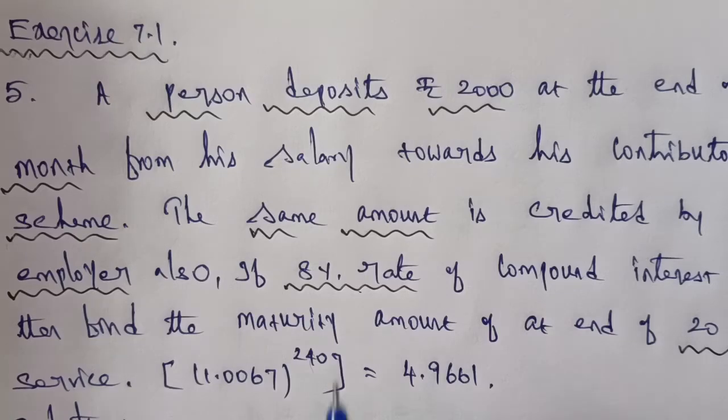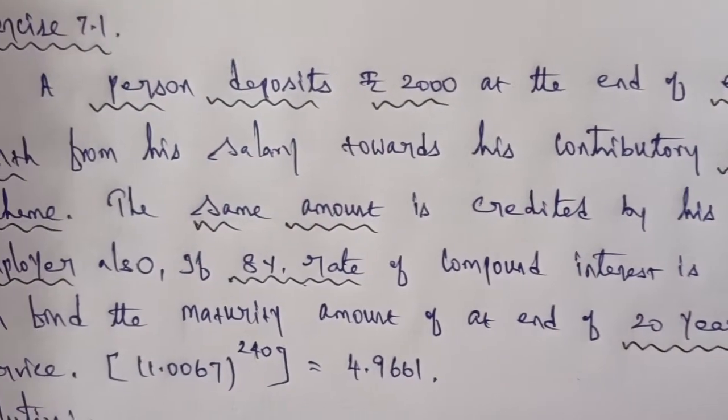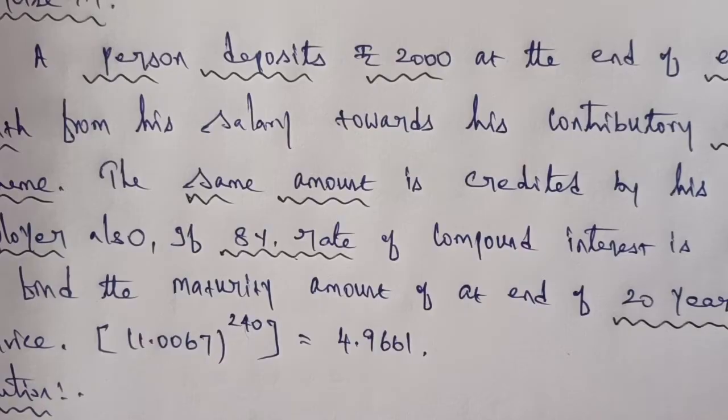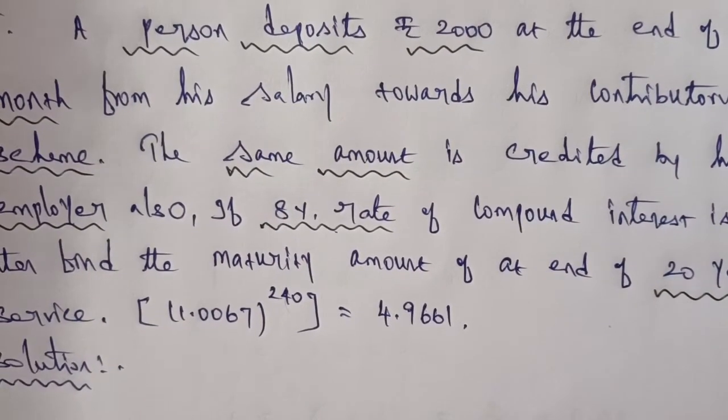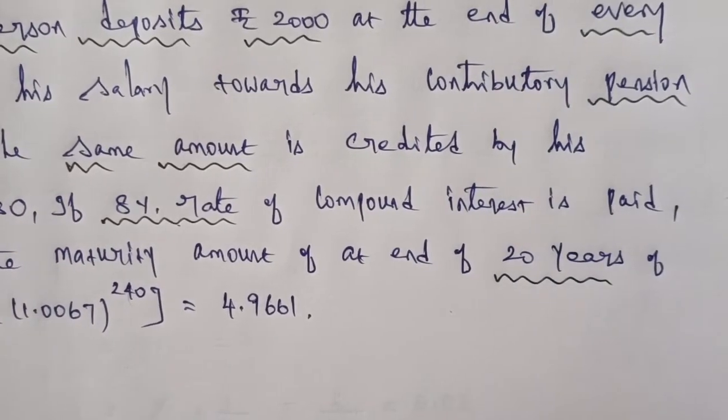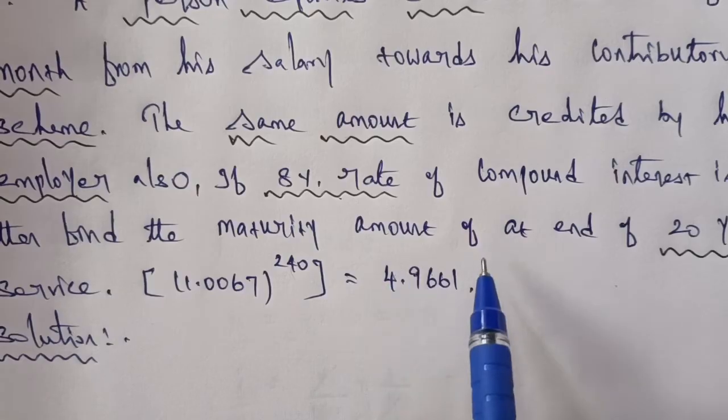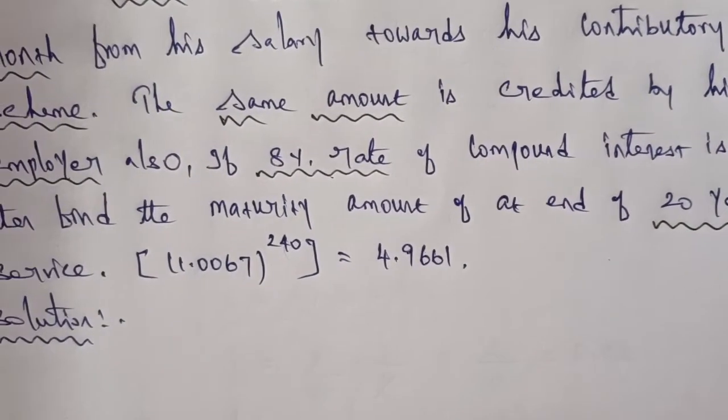Question number 5. A person deposits Rs. 2000 at the end of every month from his salary towards his contributory pension scheme. The same amount is credited by his employer also. If 8% rate of compound interest is paid, then find the maturity amount at the end of 20 years of service.